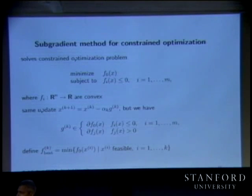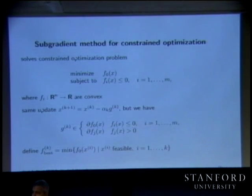Does that step reduce f_j? No — the subgradient method is not a descent method. There's no reason it should.